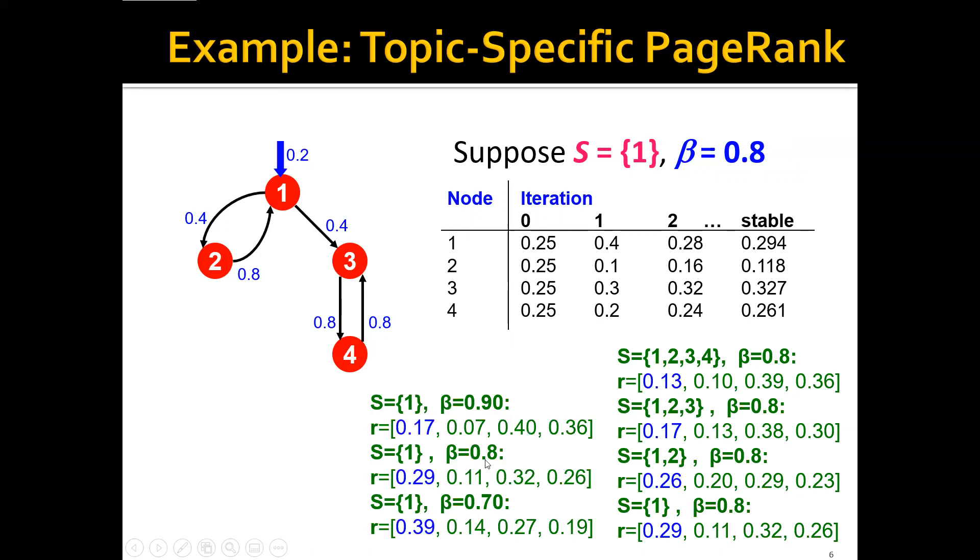And similarly, let's say that we fix the teleport set to be only node 1, and we change the beta from 0.9 to 0.8 to 0.7. We can see that the score for node 1 also keeps getting larger and larger. And this is also intuitive because when beta gets smaller, you will actually have a larger weight of teleportation. And since they all teleport to node 1, then the final score for node 1 will get larger and larger.